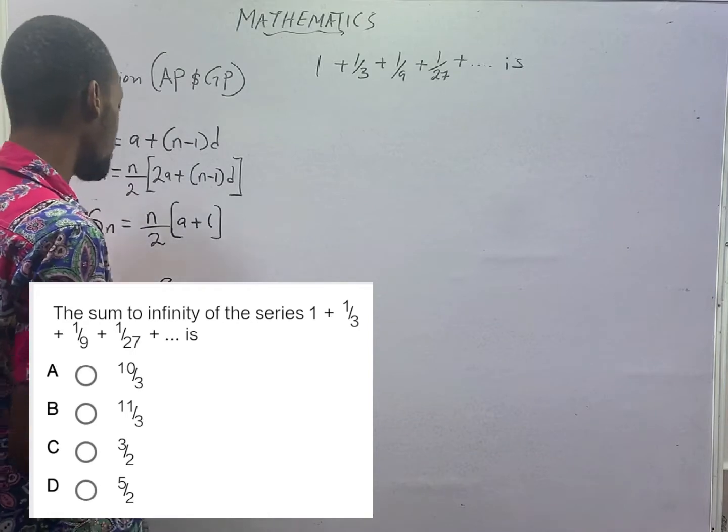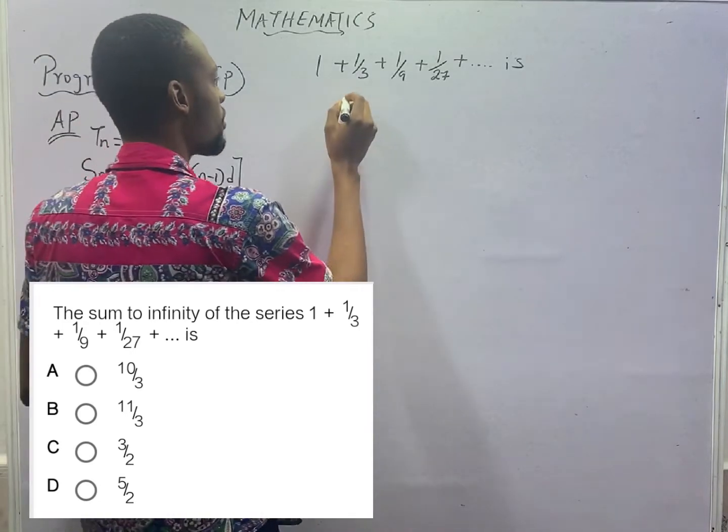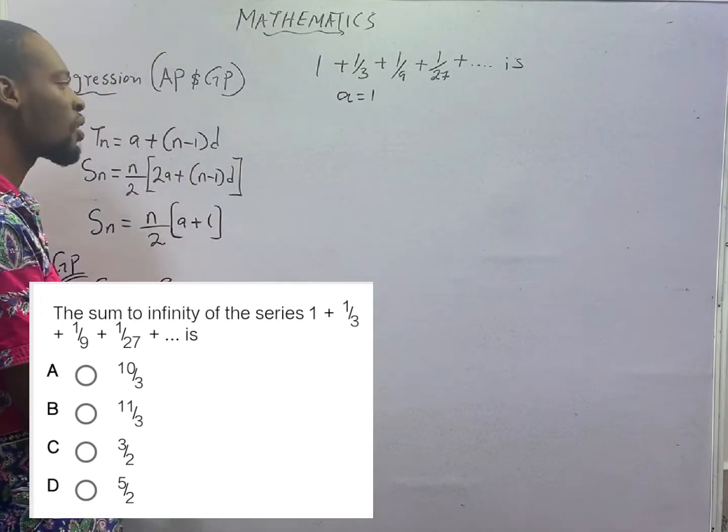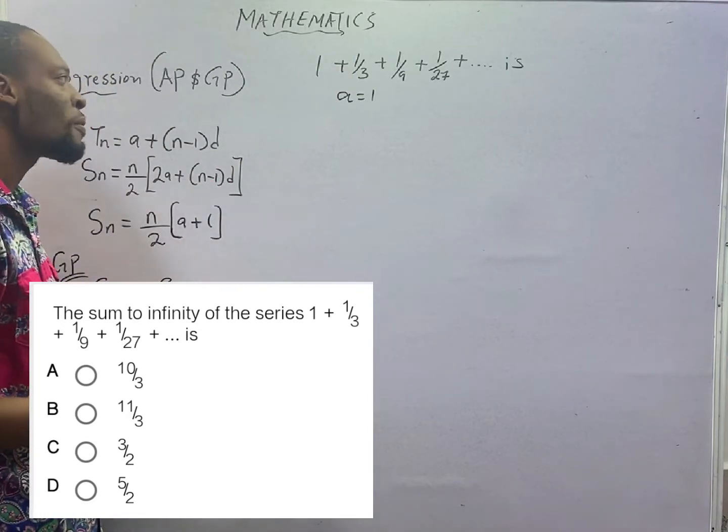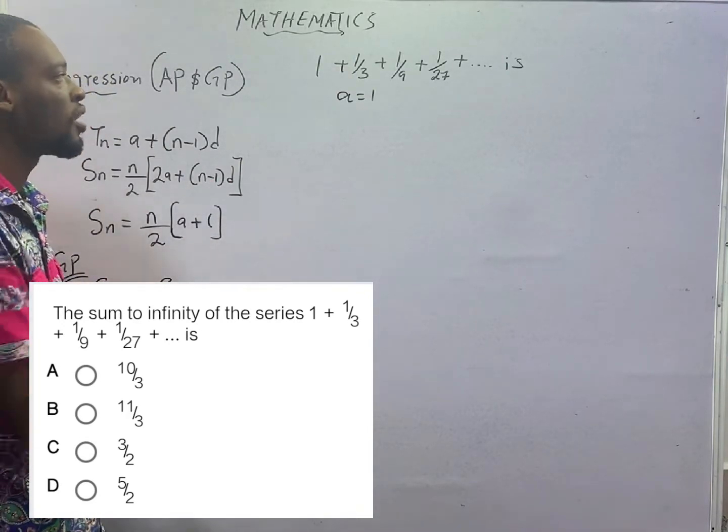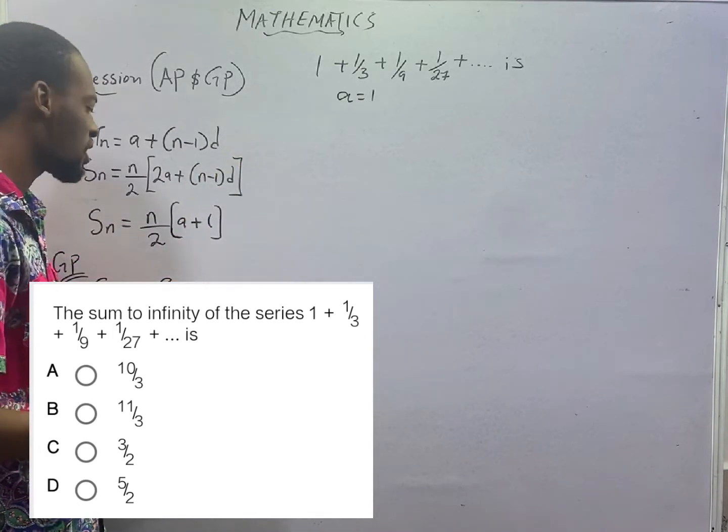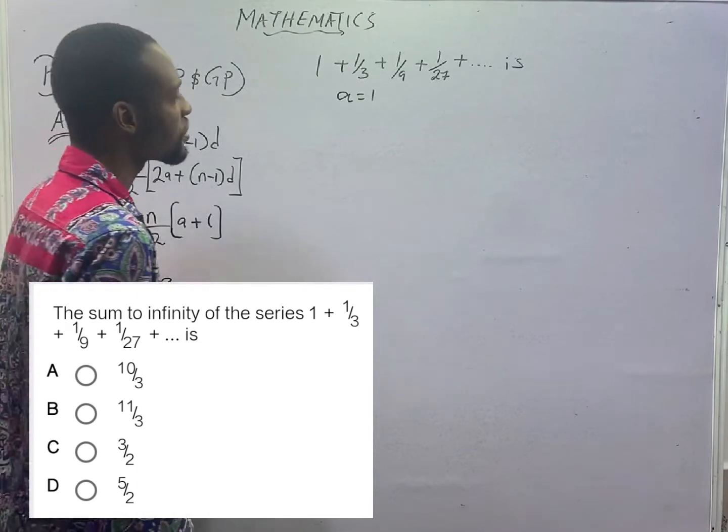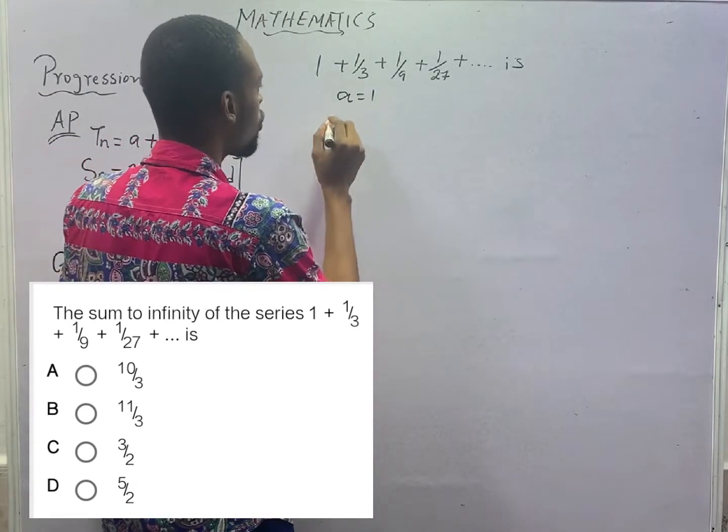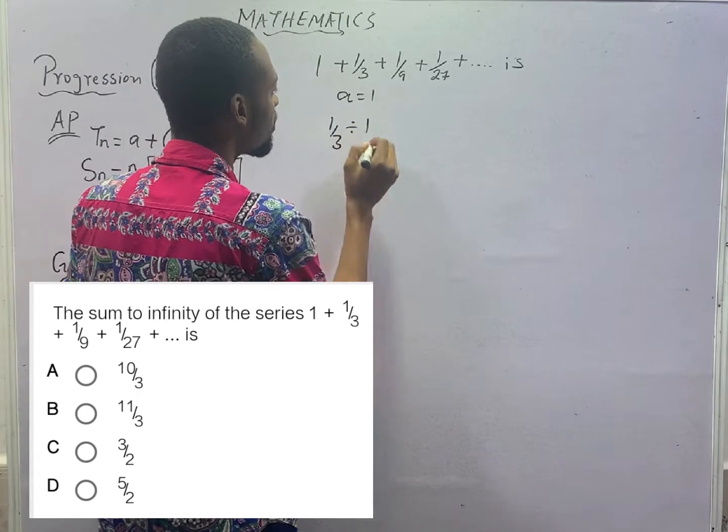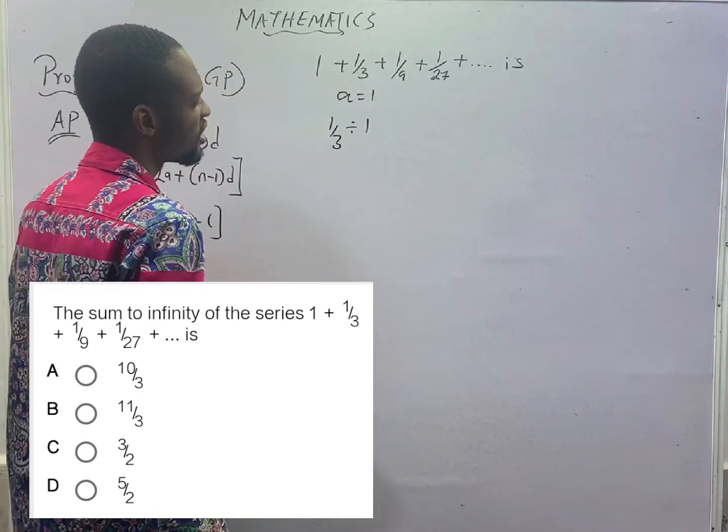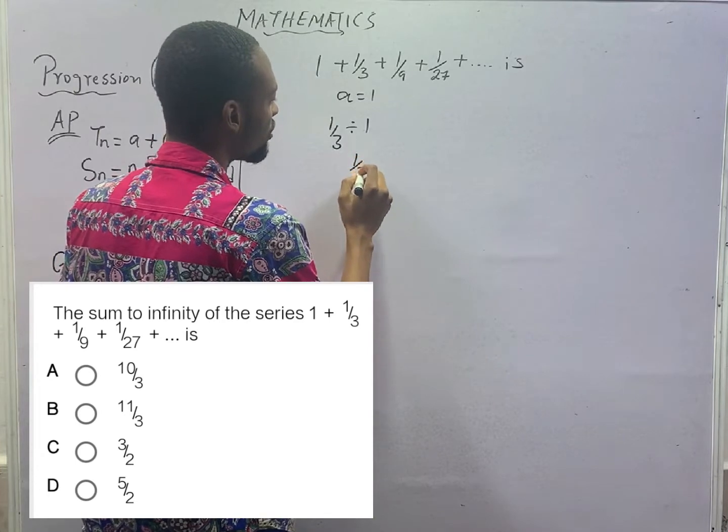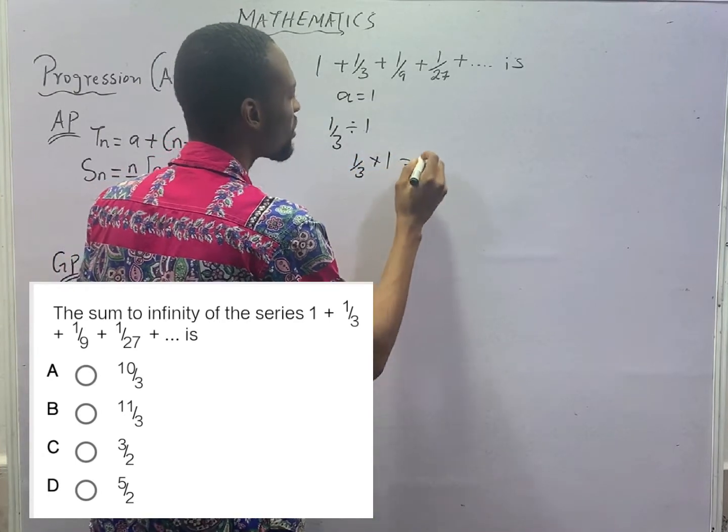What is A? A is the first term, so A equals 1. What is R? R is the common ratio. The second number divided by the first number or the third divided by second. This gives us 1/3 divided by 1, which is the same as 1/3 times 1. That is 1/3.